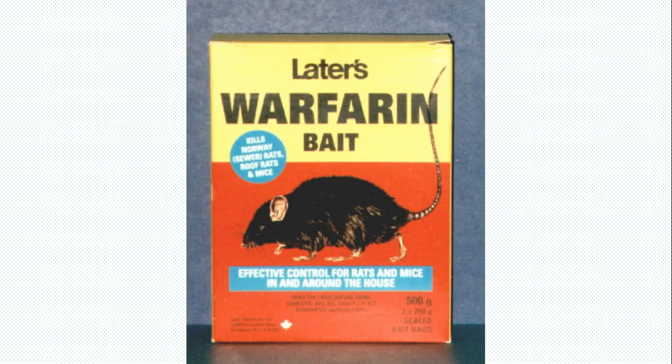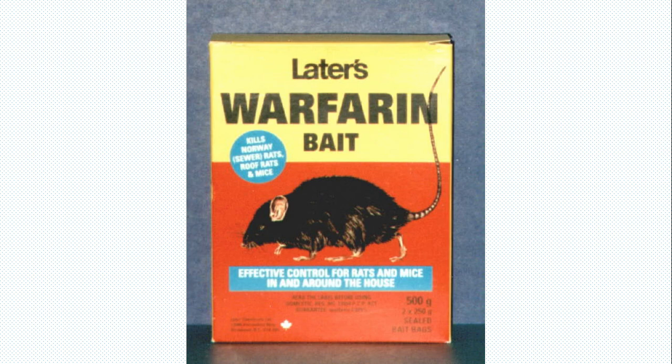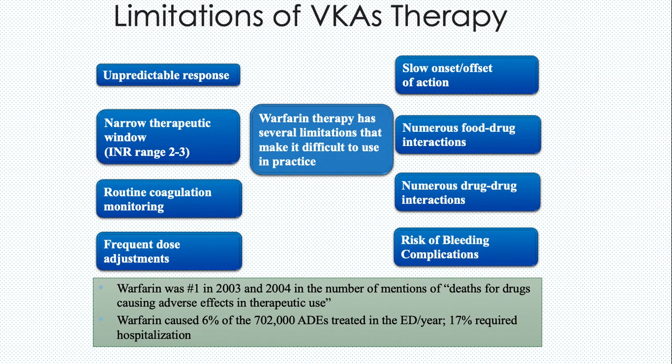We are all very much aware what warfarin was actually meant to be — it was meant to be a rat poison, and it was an accidental discovery. That is how it started being used as an anticoagulant in humans. However, we are also very much aware of its limitations: it is unpredictable, has a narrow therapeutic range, and requires very regular monitoring. The onset and offset are also slightly unpredictable and take a lot of time.